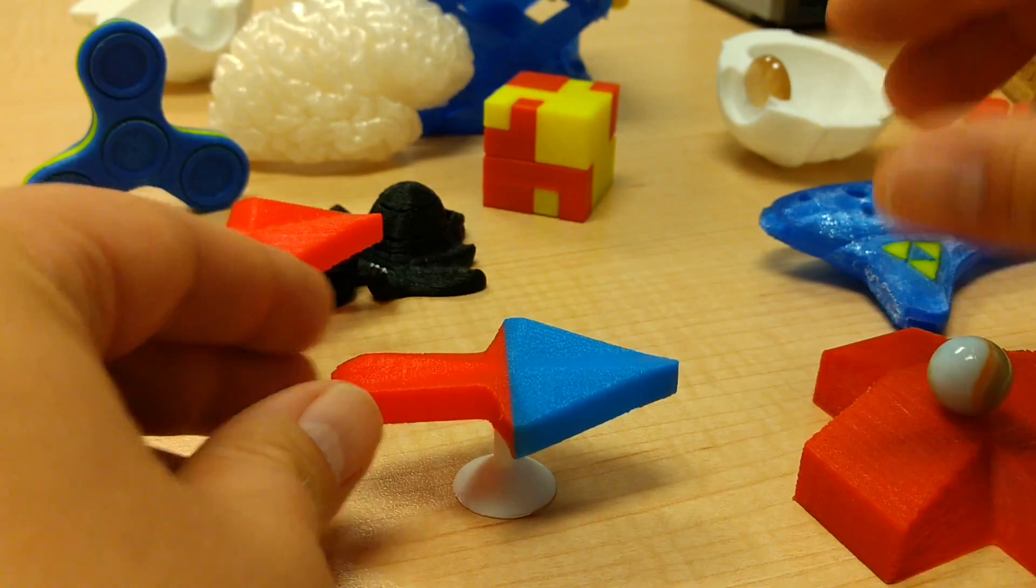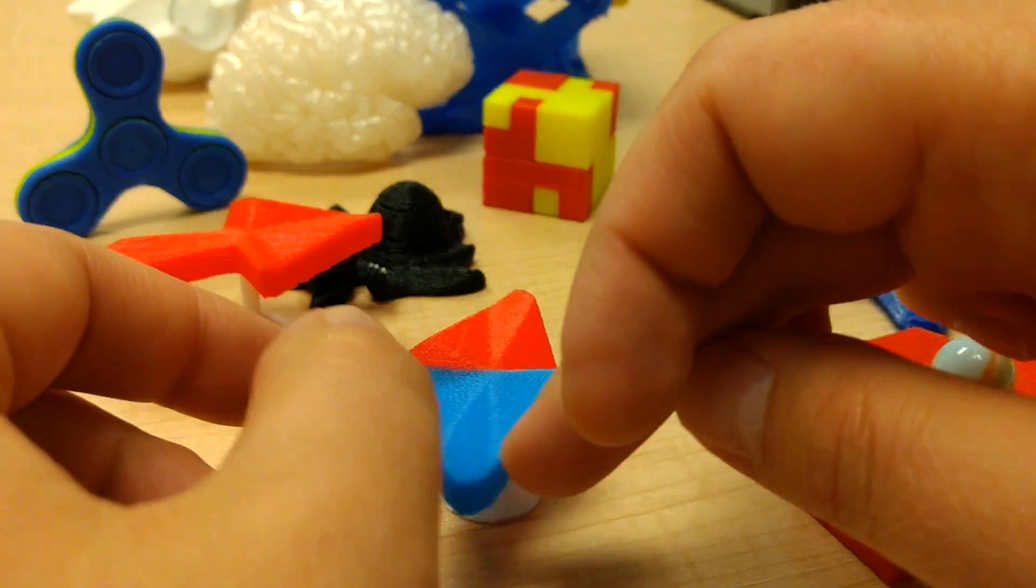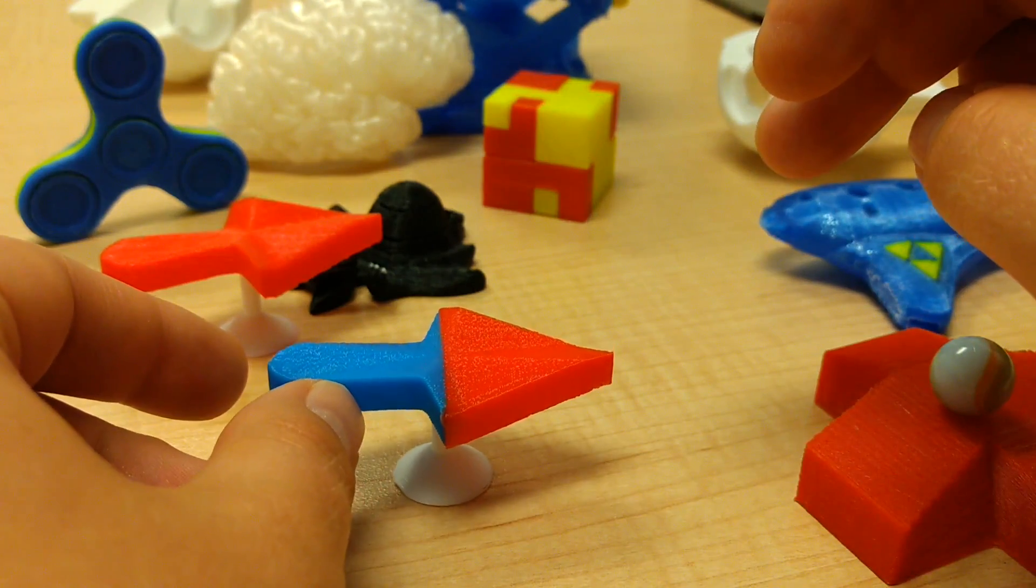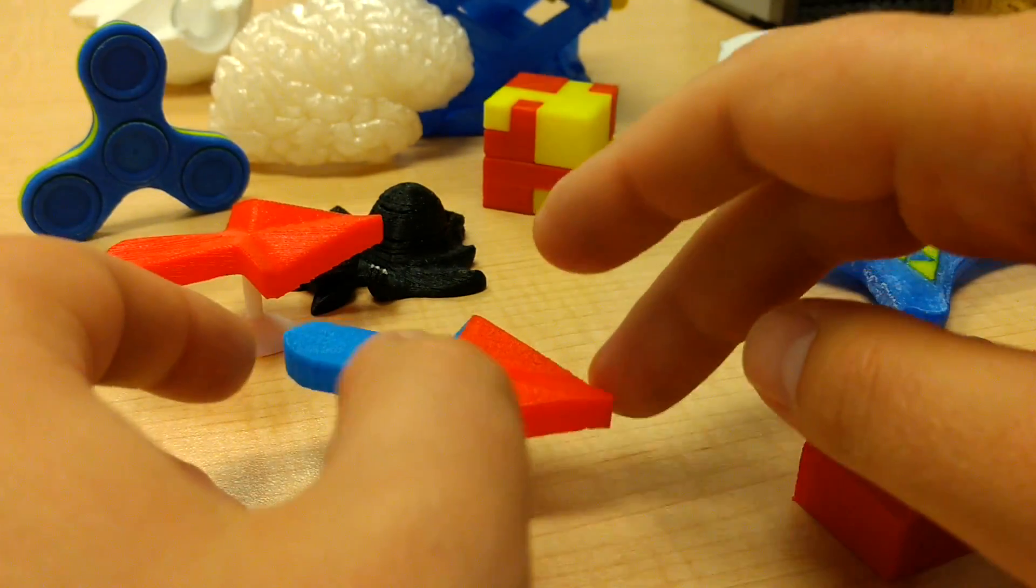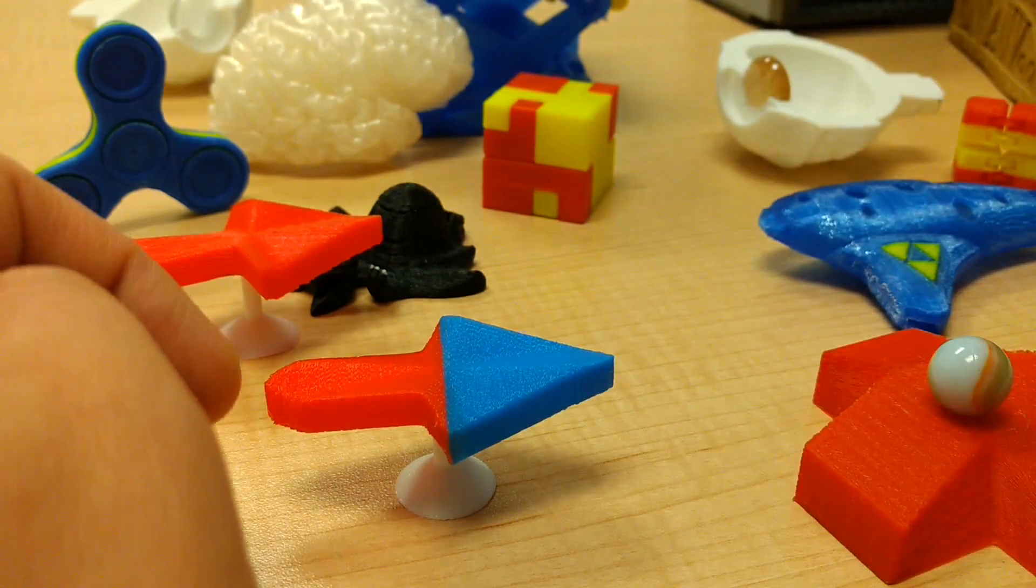So I added some color to that. Now we've got the blue pointing to the right. We'll rotate it. Now we've got the red pointed to the right. Rotate it again. Blue pointed to the right.